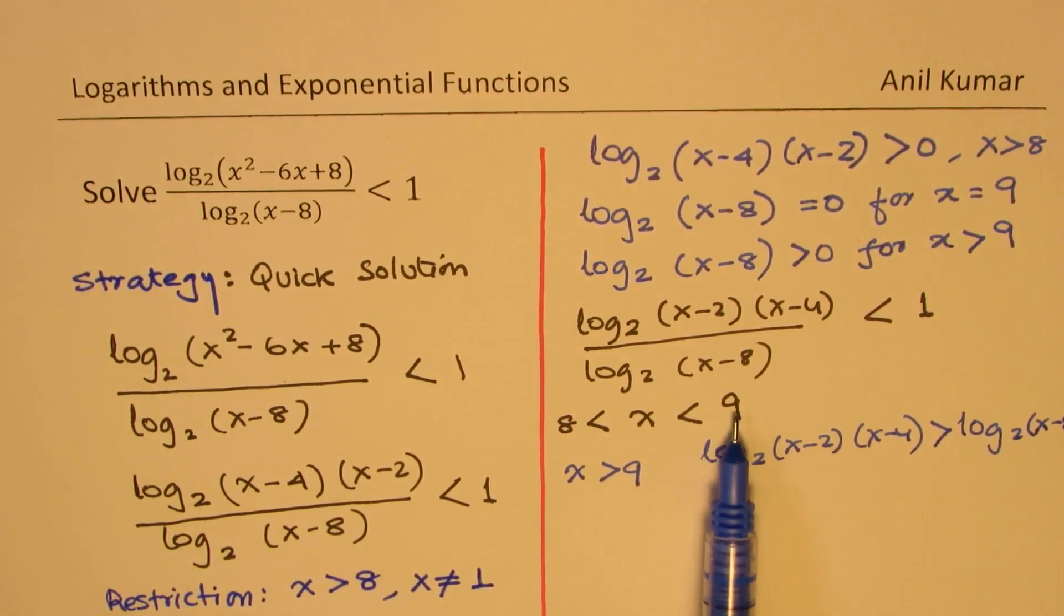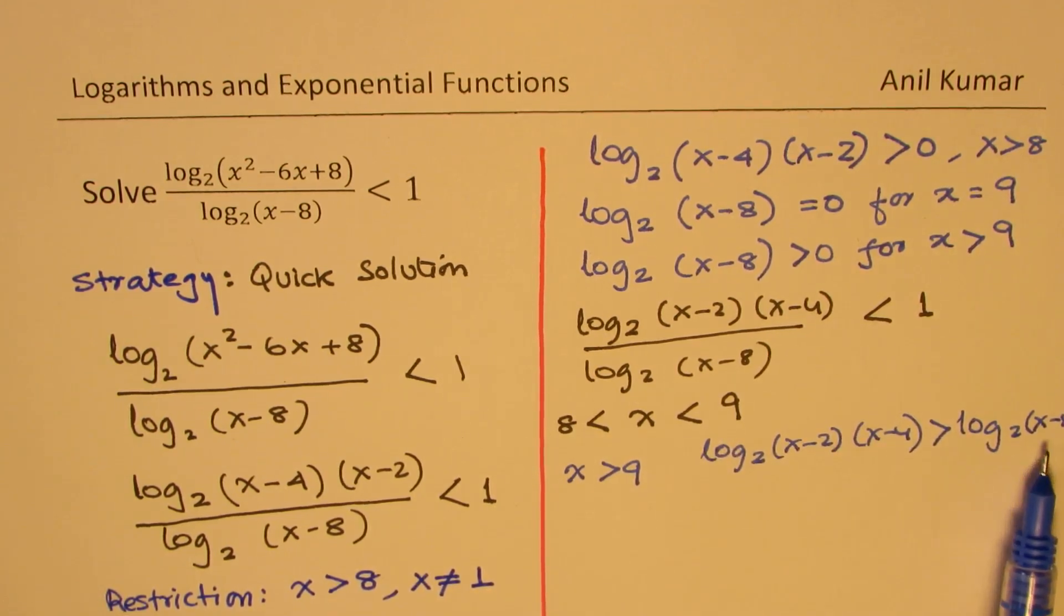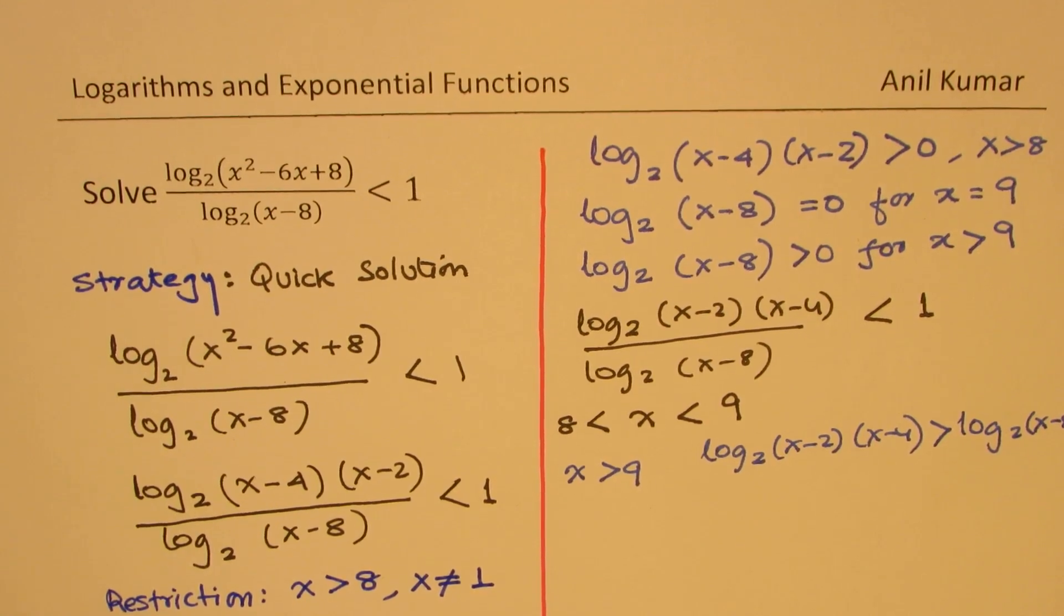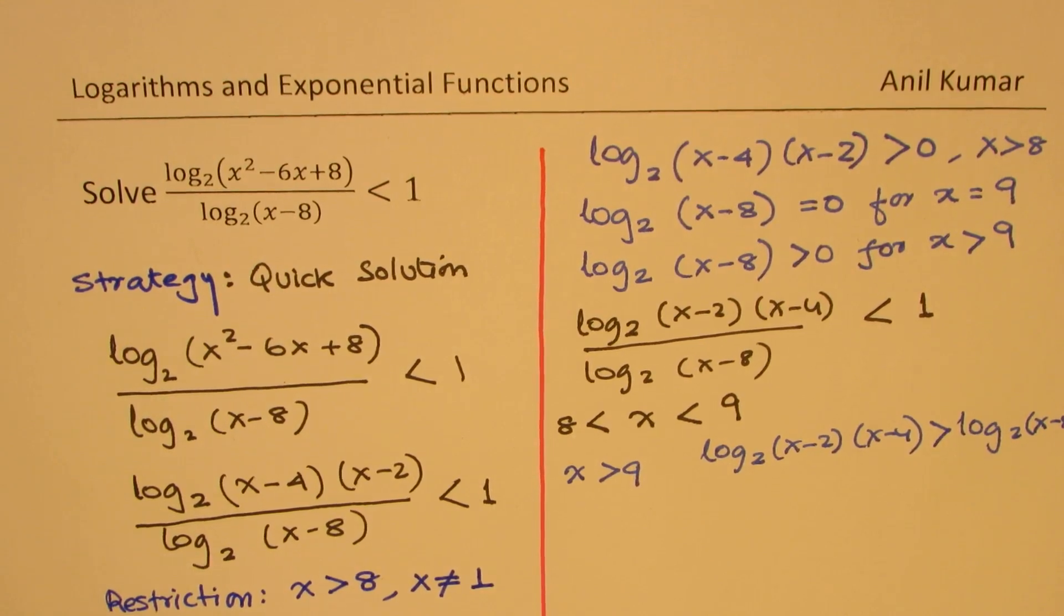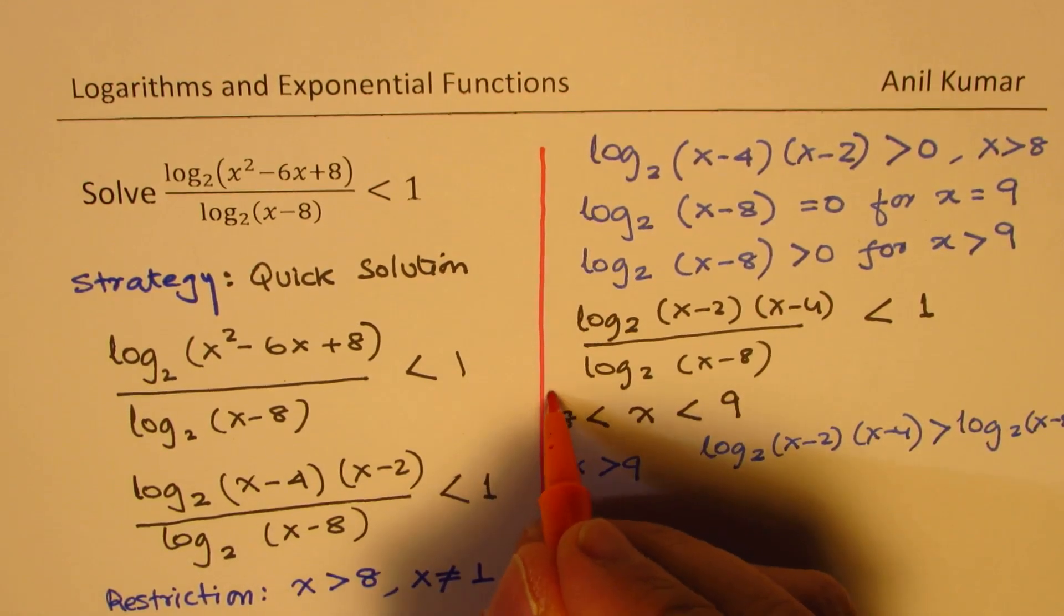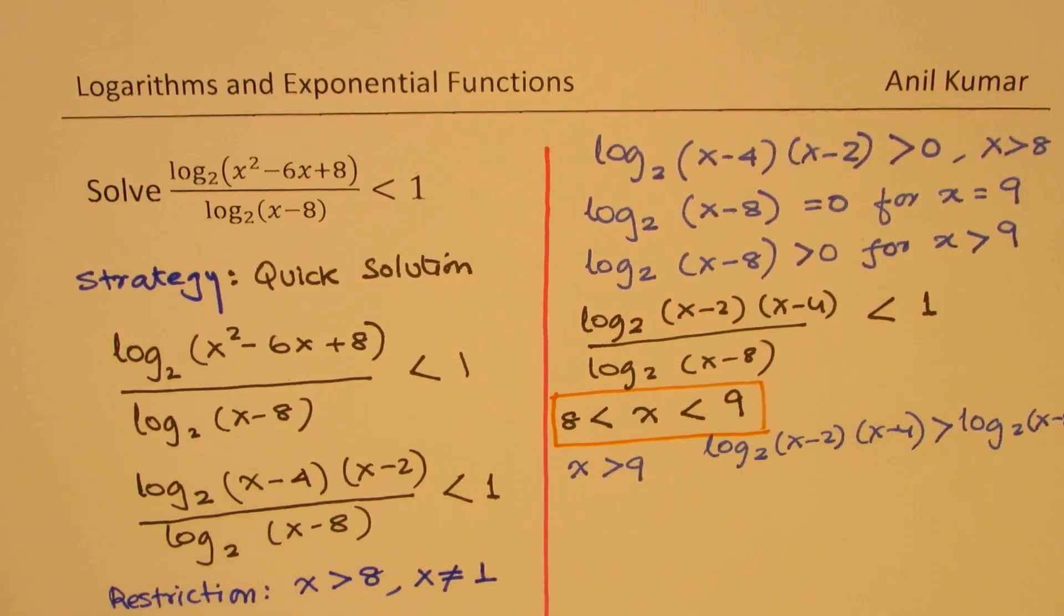For any value, you will notice that this value is greater than the denominator, which is x minus 8. So definitely, the only solution is when x is between 8 and 9. So by reasoning, we can easily find that the solution is x is in between 8 and 9.